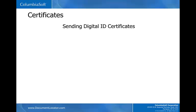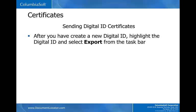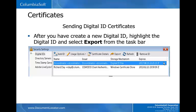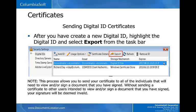Sending digital ID certificates. After you have created a new digital ID, highlight the digital ID and select Export from the taskbar. This process allows you to send your certificate to all of the individuals that will need to view and/or sign a document that you have signed. Without sending a certificate to the other users, your signature will be deemed invalid.